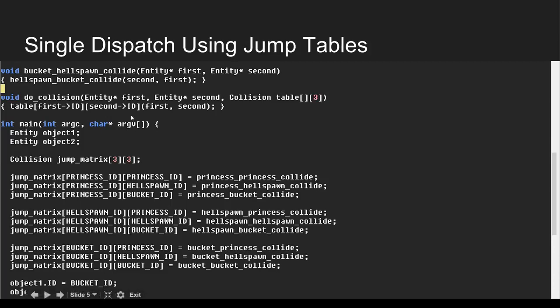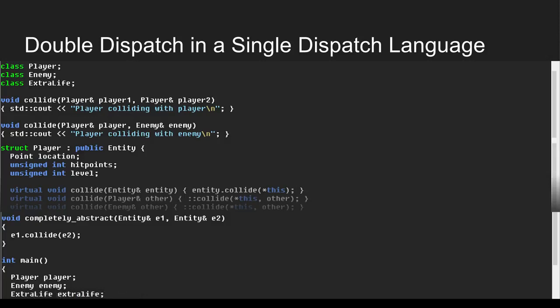This brings us to doing double dispatch in a single dispatch object-oriented language. One of the big problems with the C approach is that we had to manually generate a jump table or dispatch table — we're reproducing what the compiler does automatically. A single dispatch object-oriented language can't do multiple dispatch by default, so the goal is to avoid having to use those IDs in our actual code, and instead leverage the jump tables the language already generates for us.